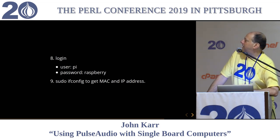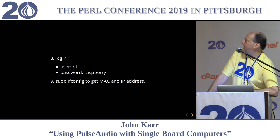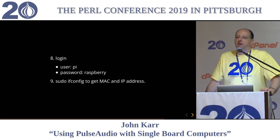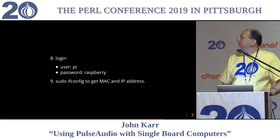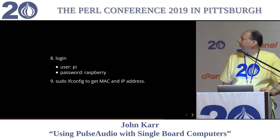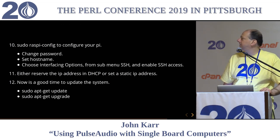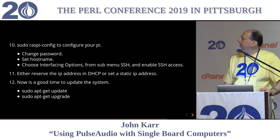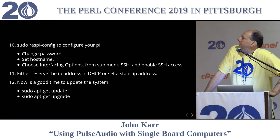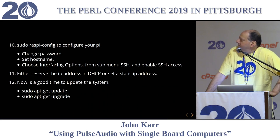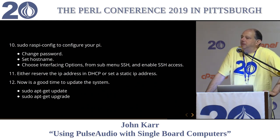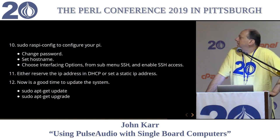Log in your first time. Your user is 'pi', your password is 'raspberry'. You'll use 'sudo ifconfig' to get your MAC and IP address. Then you'll run the Raspbian config. You'll want to change that password, set a hostname, and enable SSH access because you are going to run headless.